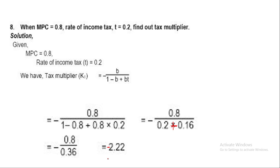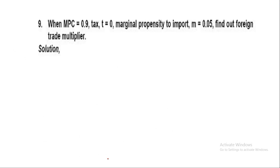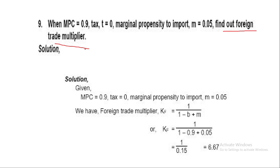Question 9: Find the foreign trade multiplier if MPC = 0.9 and marginal propensity to import M = 0.05. The formula is 1 upon (1 minus B plus M). With B = 0.9 and M = 0.05, we get 1 upon (1 minus 0.9 plus 0.05) = 1 upon 0.15 = 6.67, which is our required answer.